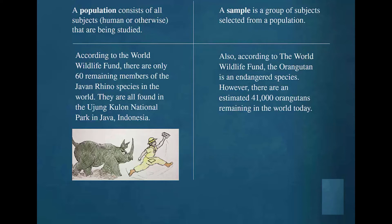It is reasonable that with a carefully planned study, where appropriate safety precautions are observed, it would be possible to gather data related to all 60 of the remaining Javan rhinos. This would represent a population.